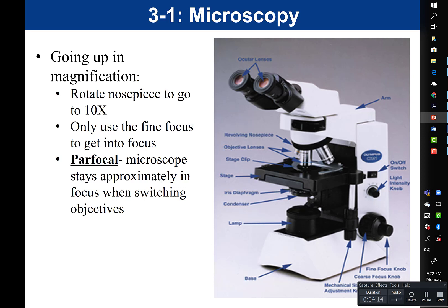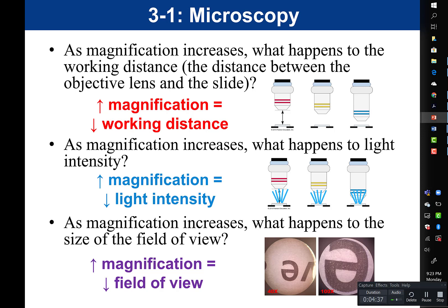You want to know that we call microscopes parfocal, meaning the microscope stays approximately in focus when switching objective lenses. This is why when we go up in magnification, we only need to adjust the fine focus — the microscope should stay roughly in focus as magnification increases. You should know the answers to three questions: as magnification increases, what happens to working distance, light intensity, and size of field of view?